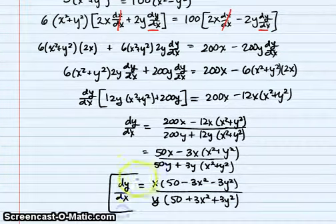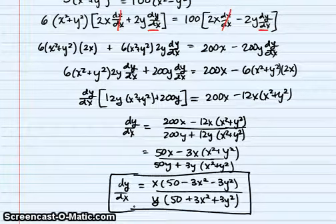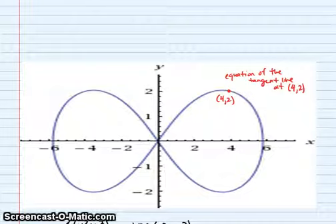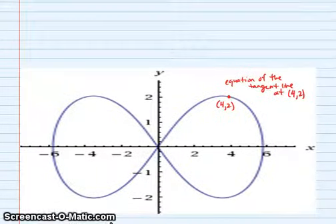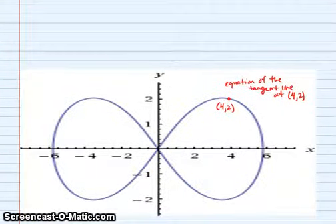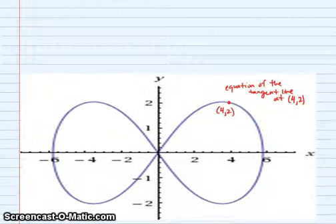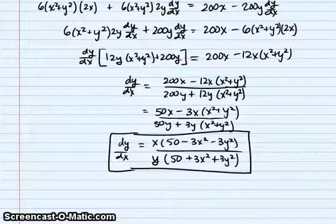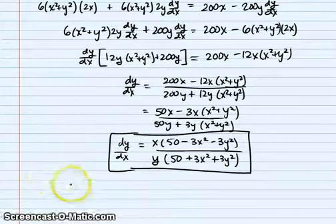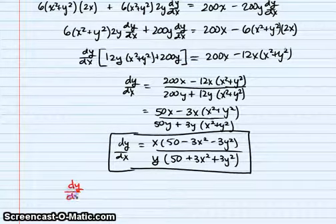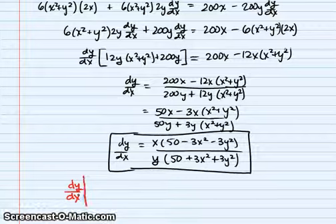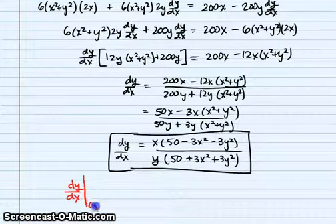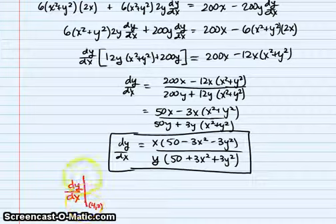Let's remember why we were taking this derivative — we were looking at the graph and wondering what the equation of the tangent line was at (4, 2). To find the equation of the tangent line we need the point, which we already have, and the slope, which we get from the derivative. We have to plug in (4, 2) to the derivative. The vertical bar notation means 'evaluate at' that point.